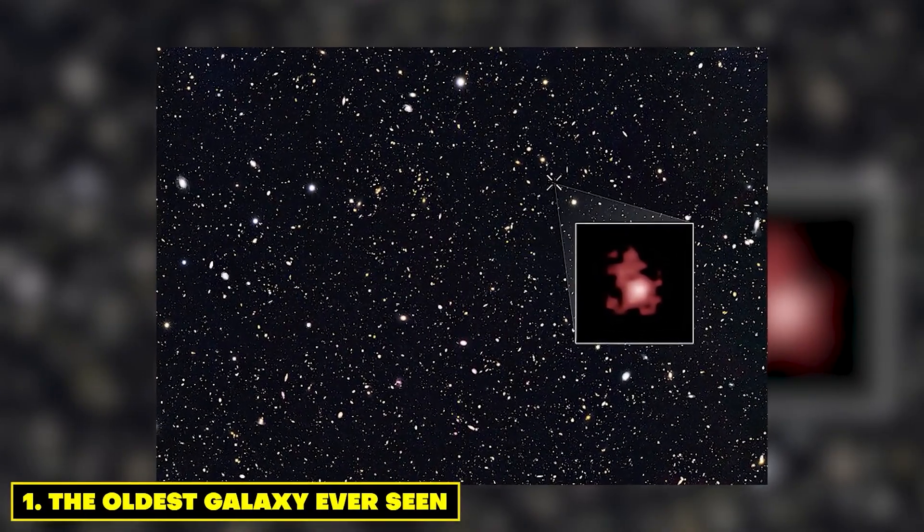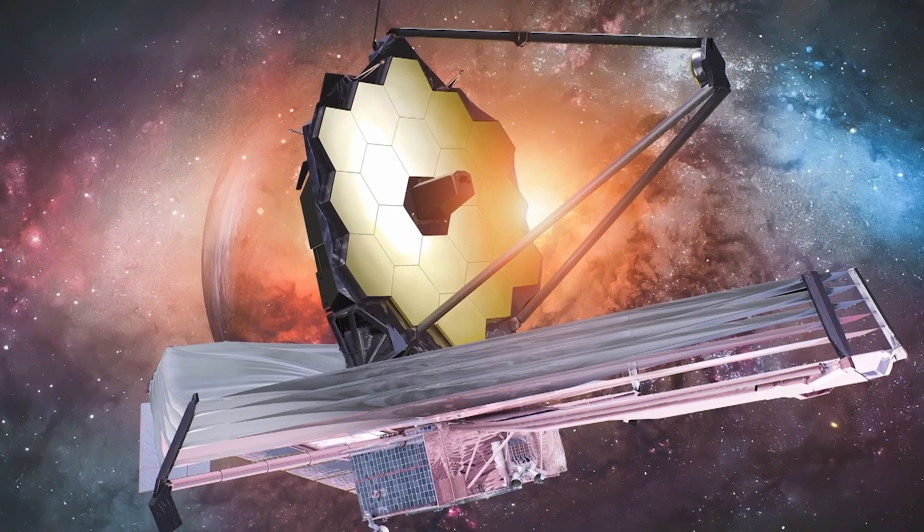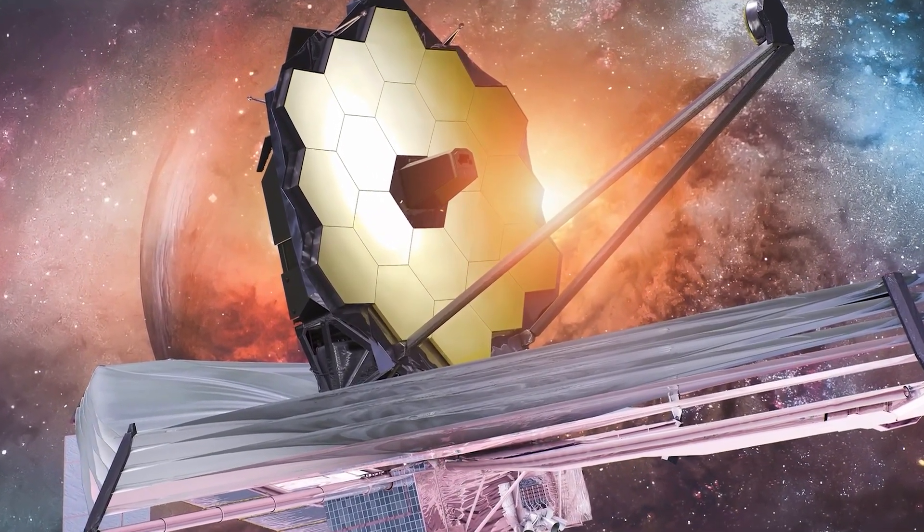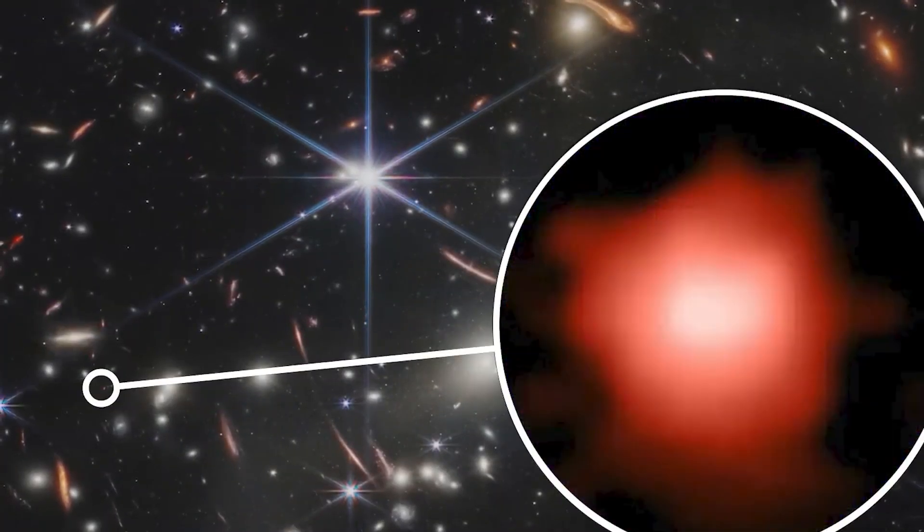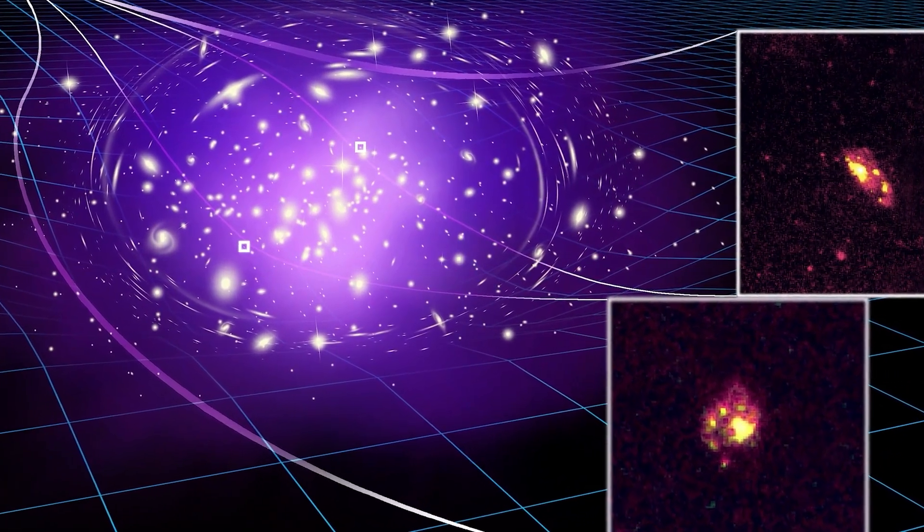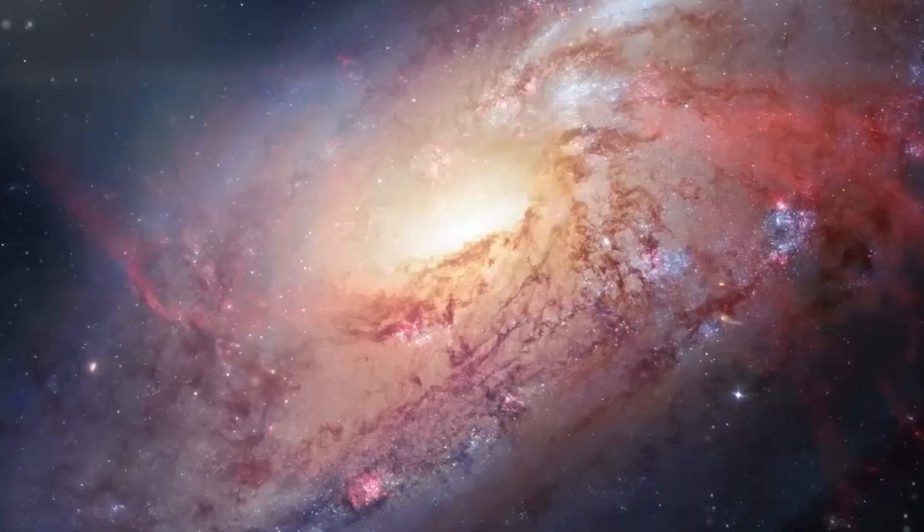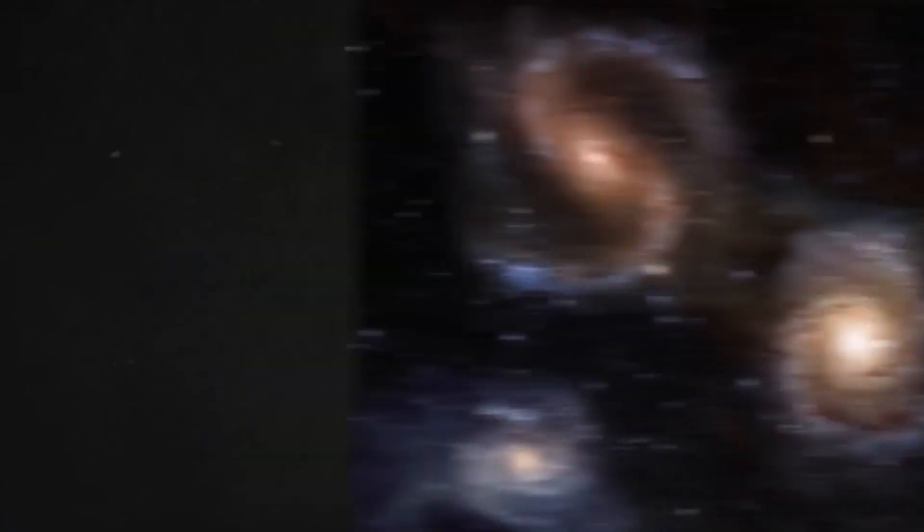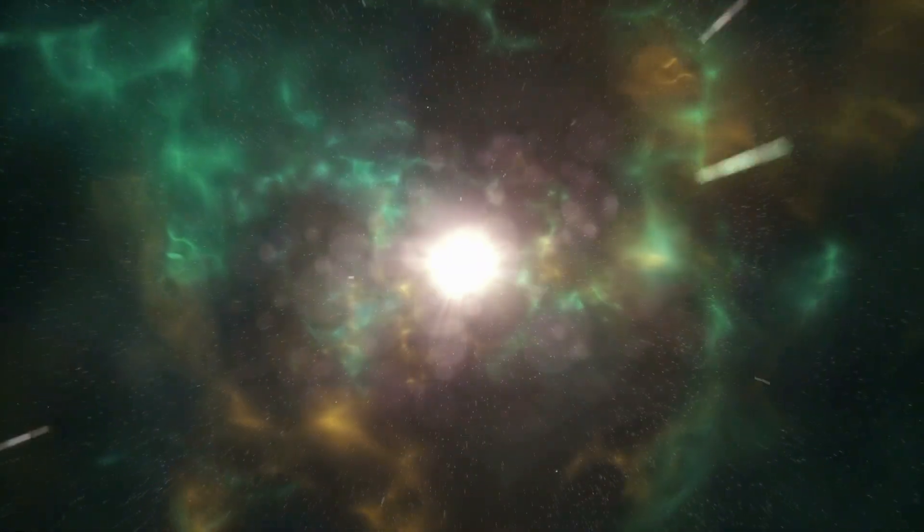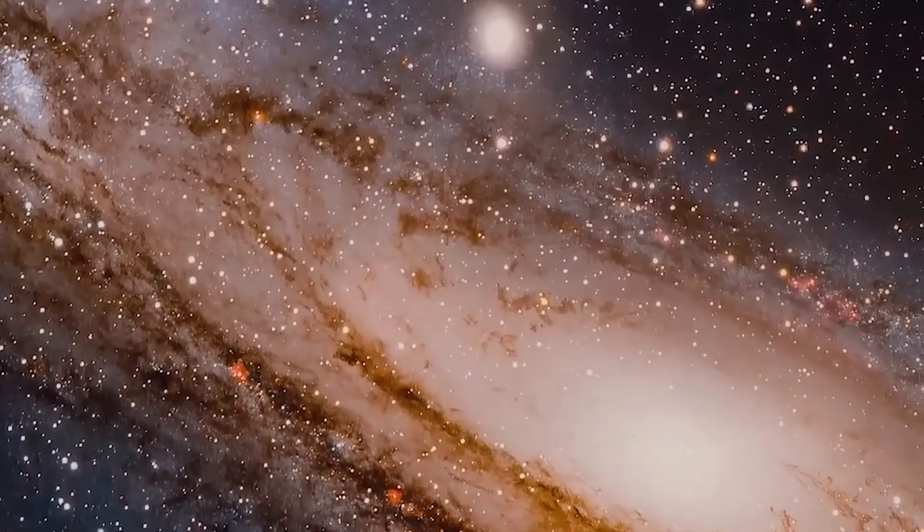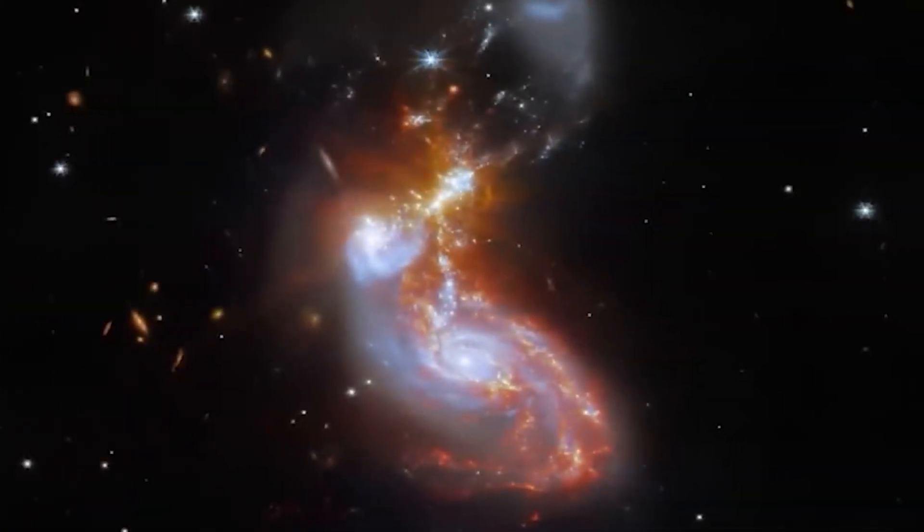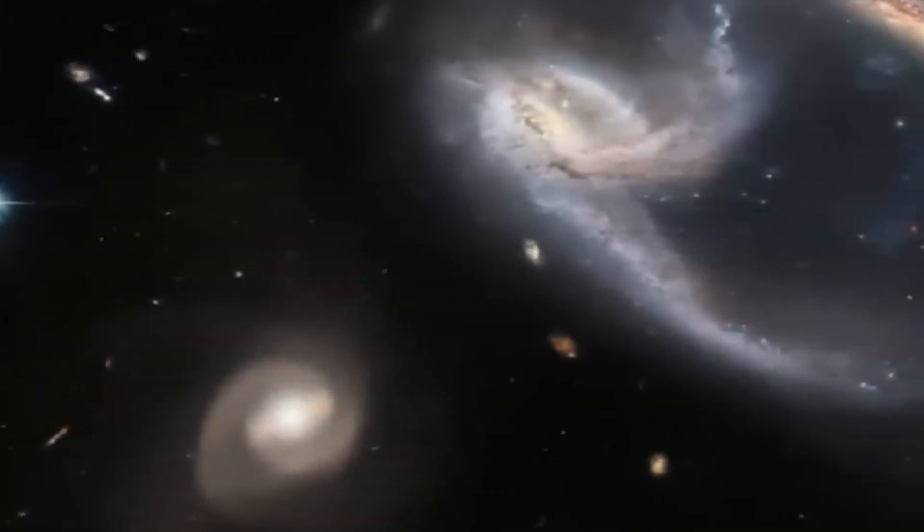Number 1. The Oldest Galaxy Ever Seen. In a moment that transcends the ordinary, the James Webb Space Telescope reveals its most astonishing discovery to date: GN-z11, the oldest galaxy ever observed. This celestial relic lies so far beyond our grasp that its ethereal light embarked on a cosmic odyssey, spanning an astonishing 13.4 billion years, transporting us to a bygone epoch, a mere 300 million years after the Big Bang. GN-z11's existence emerges as a beacon of insight, illuminating the primordial cosmos and granting astronomers a glimpse into the very infancy of the universe itself.